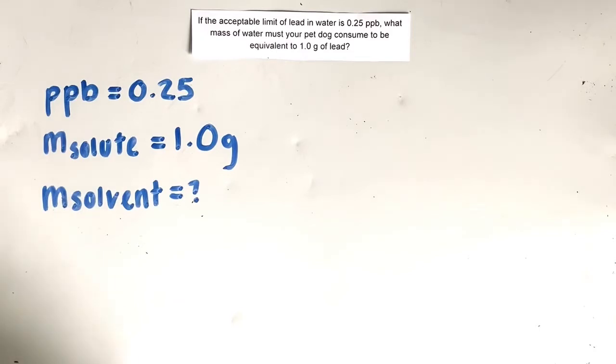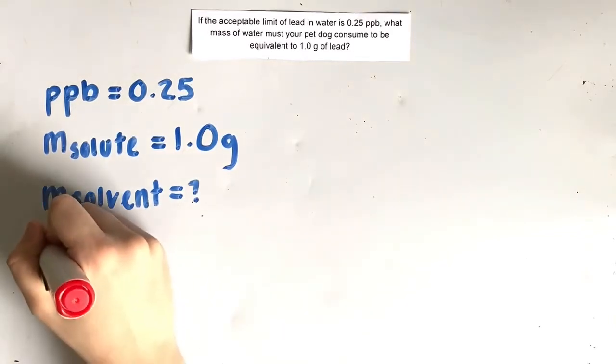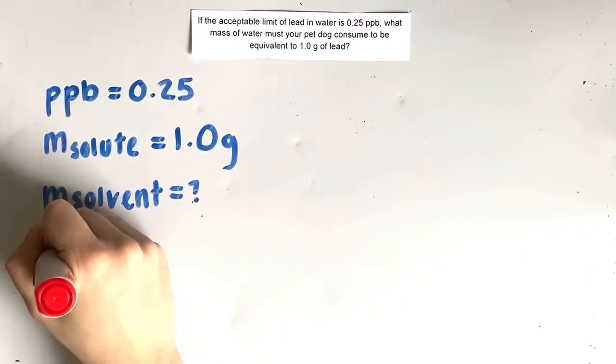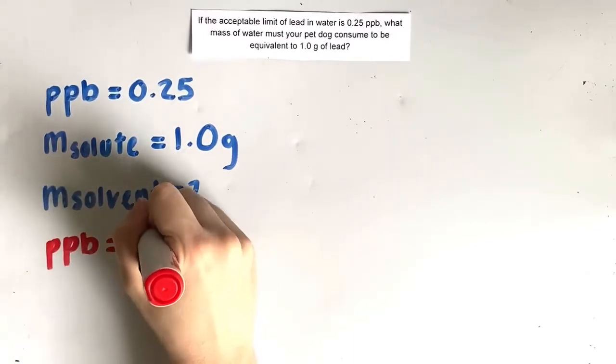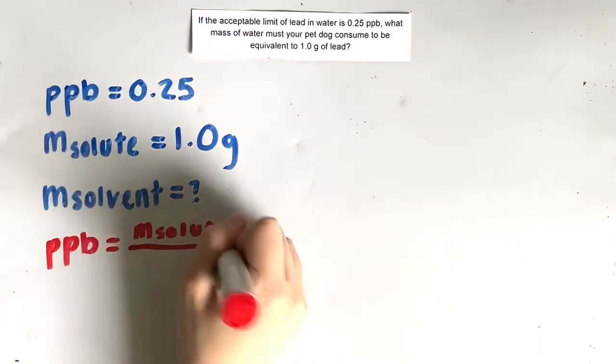We know that our parts per billion value is 0.25, and we also know that the mass of our solute is 1 gram. According to the question and our givens, this means that we are solving for the mass of the solvent.